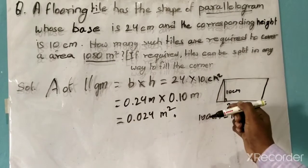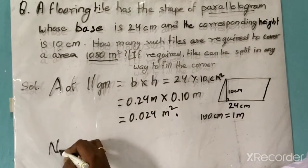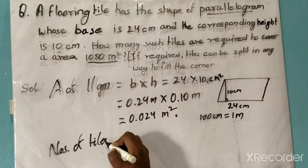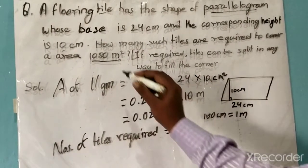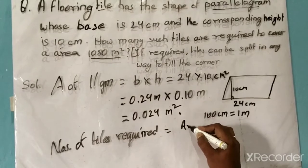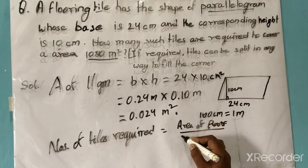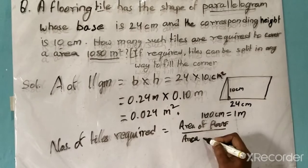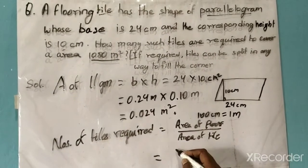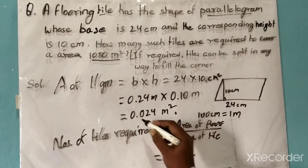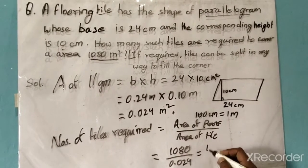This is the area of the given tile. Now, to find how many such tiles are required to cover the flooring area, the number of tiles required is equal to the area of the floor divided by the area of one tile. So that is 1080 divided by 0.024.